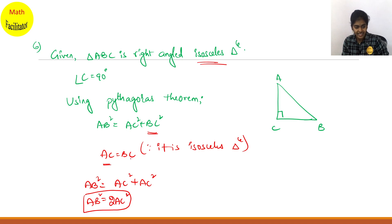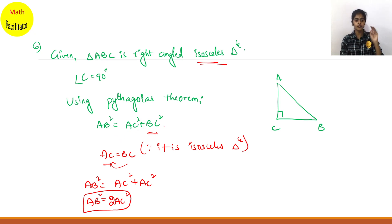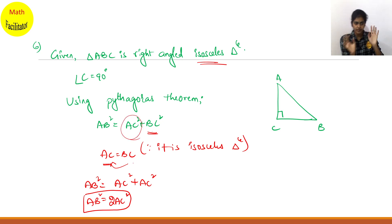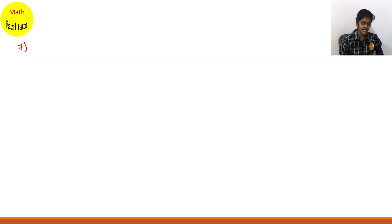Why are we converting BC into AC? Because in the question you have to prove it as two AC square, so I am writing BC as AC. If in the question they ask you two BC square, then you will write AC as BC. We always depend on the question. So O is any point in the interior of triangle ABC, and OD is perpendicular.